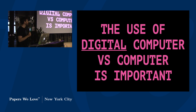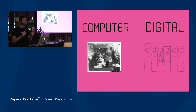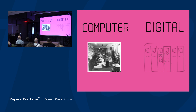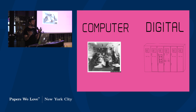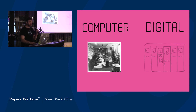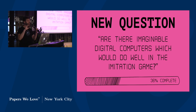The use of digital computers throughout this paper is important because there aren't only digital computers — there are also human computers. Turing worked with a great deal of them during World War II at Bletchley Park, solving Crane's equations and trying to crack Enigma. This really defines how he thinks about the question. After all this, he finally gets back to the replacement question, because a game isn't a problem — it's a game. The new question he wants to pose is: are there imaginable digital computers which would do well in the imitation game?